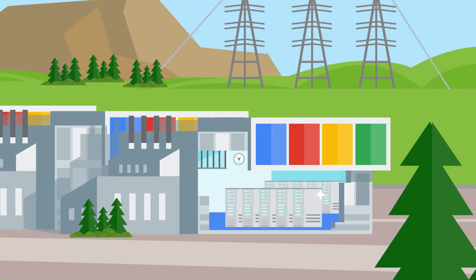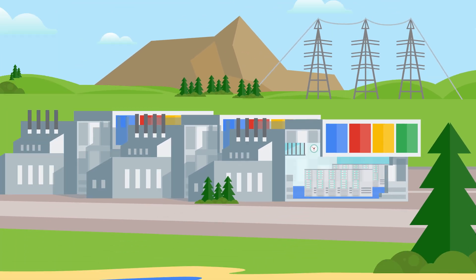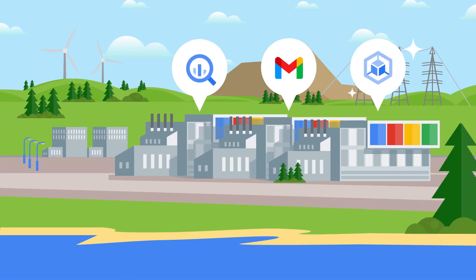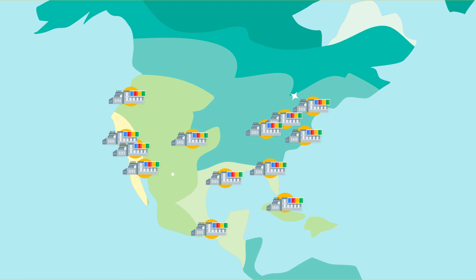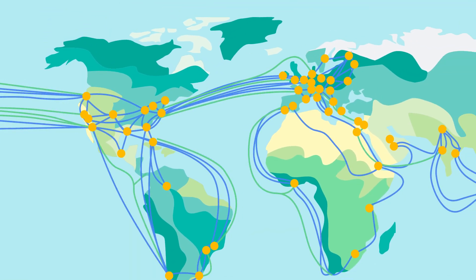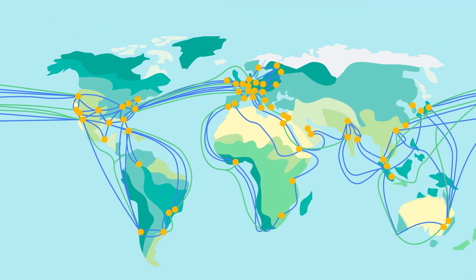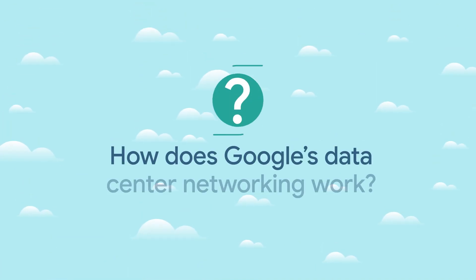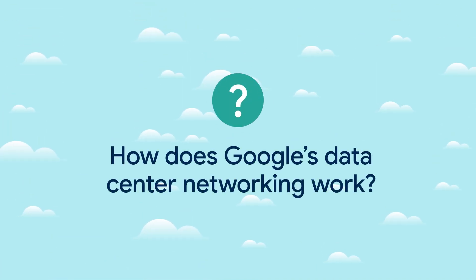At Google, our services and products run on a globally distributed computing system made up of many machines and data centers. They're all linked to a large-scale network that's core to what makes Google services, including Google Cloud, run. So how does Google's data center networking work?